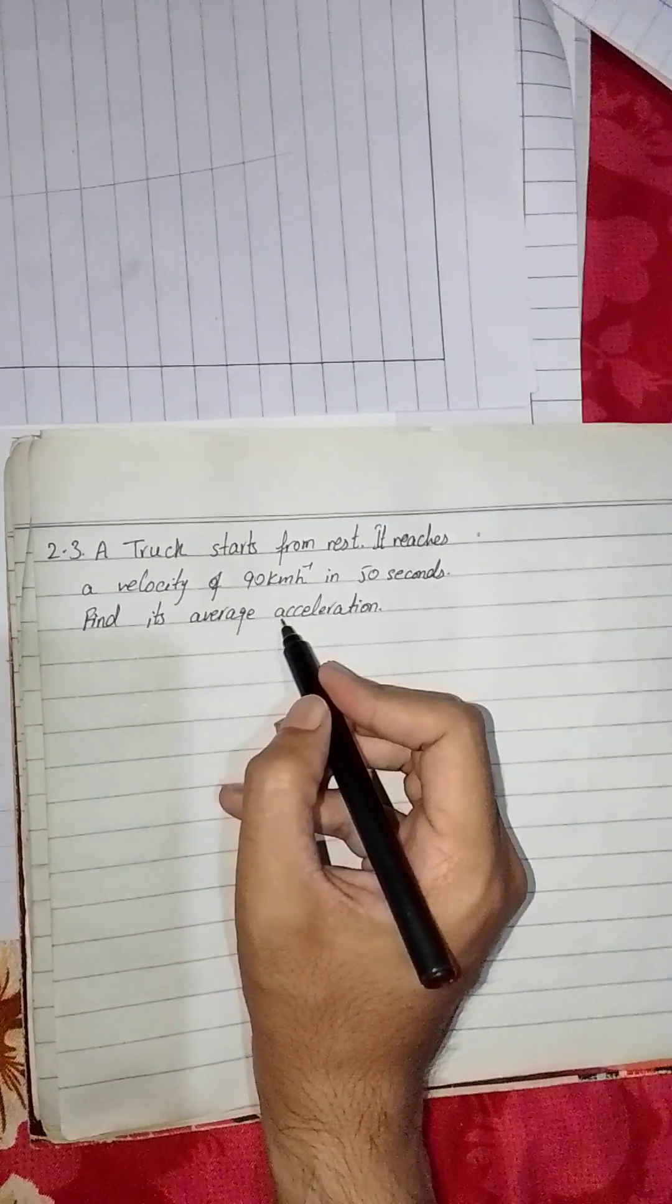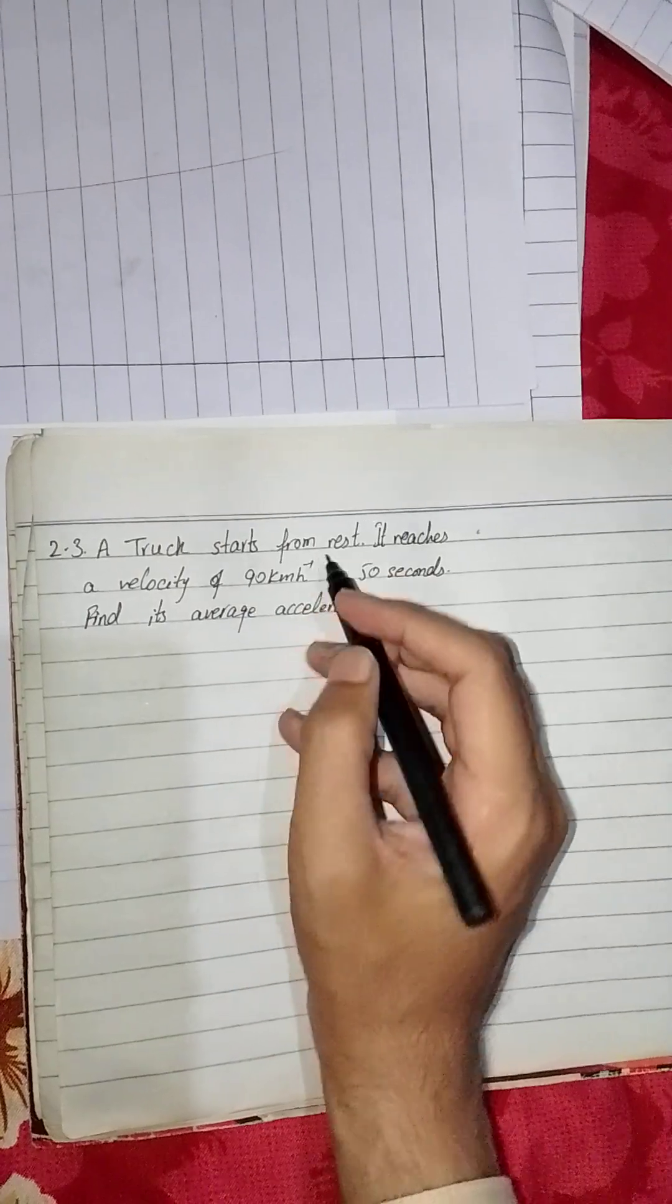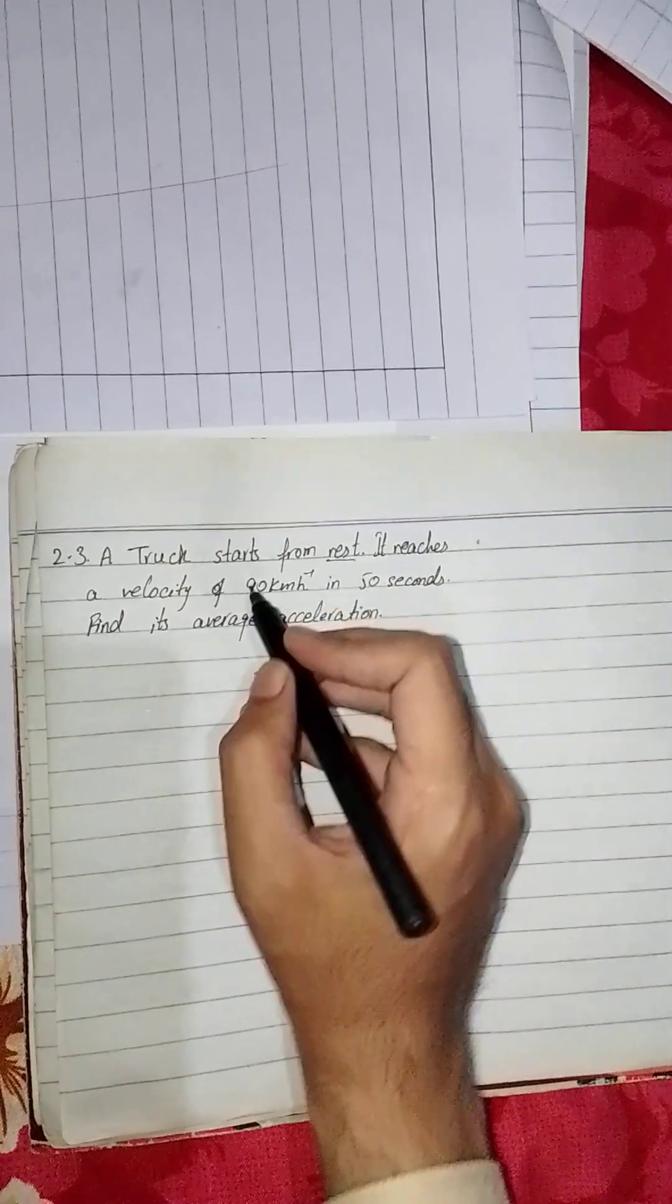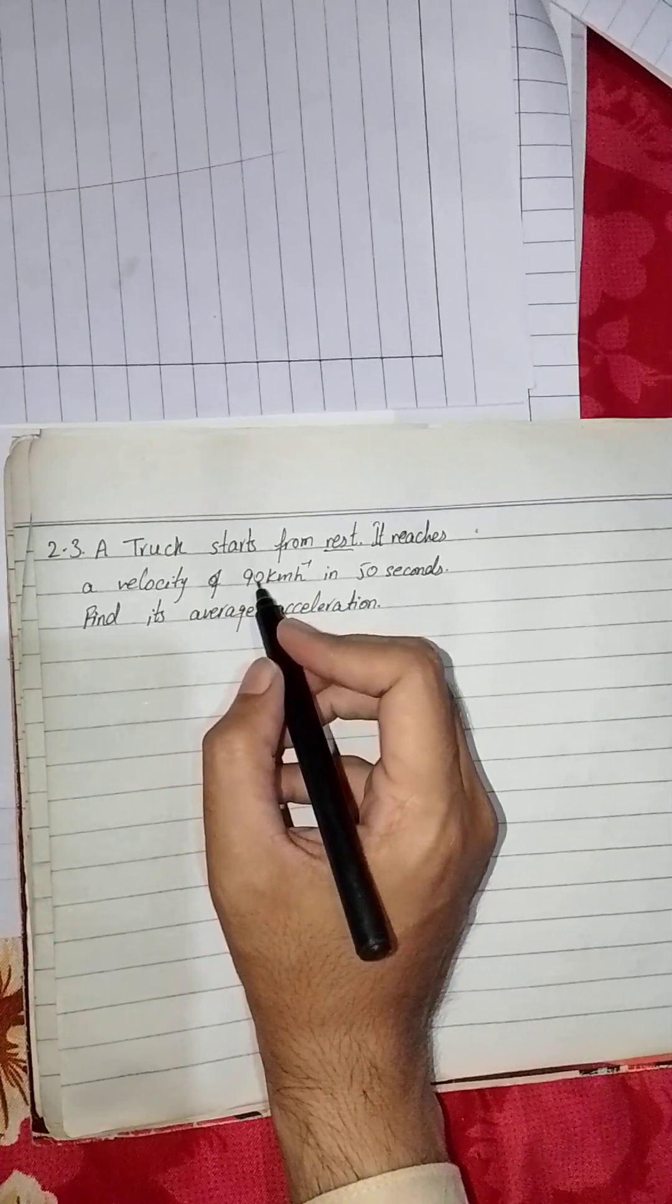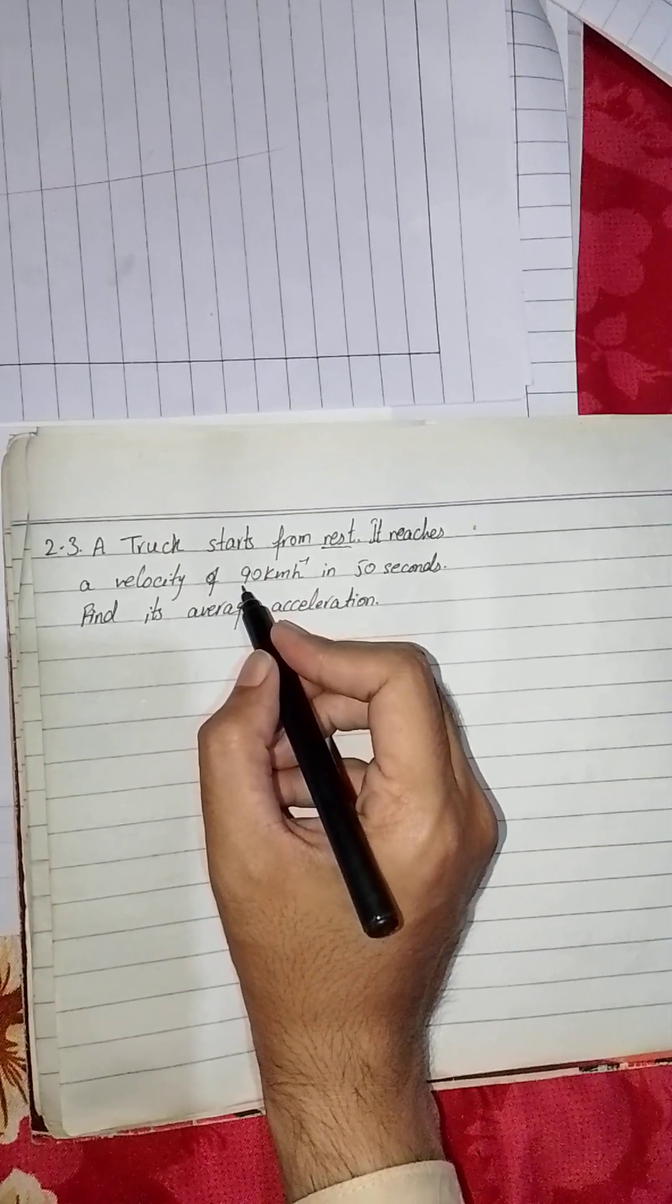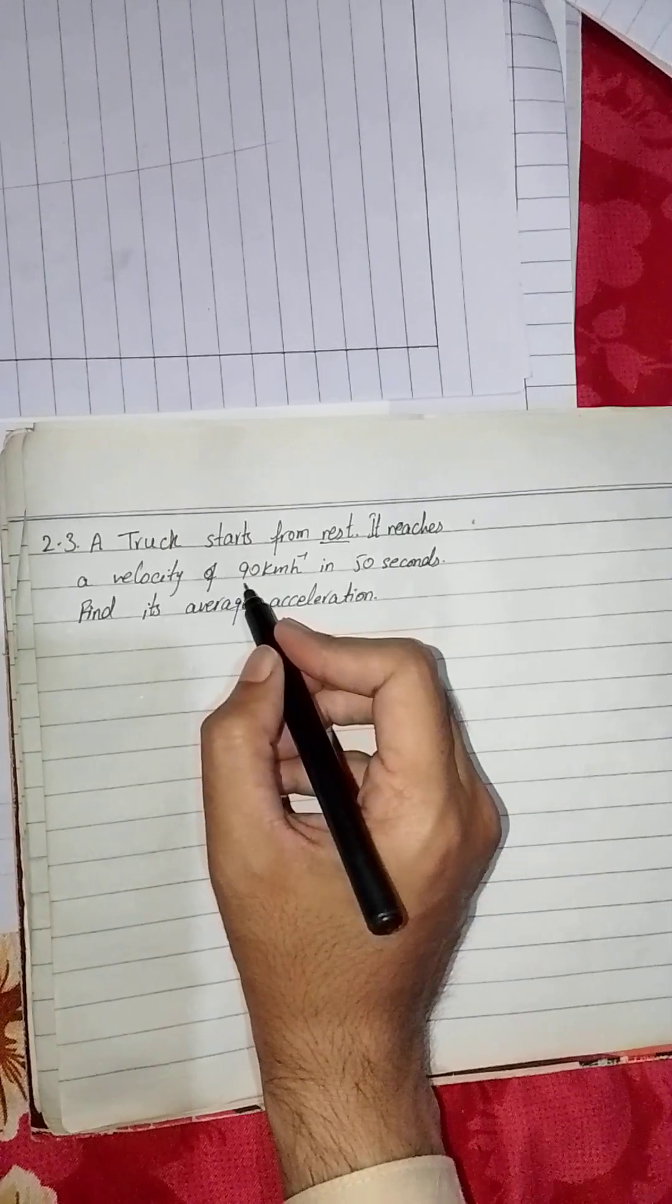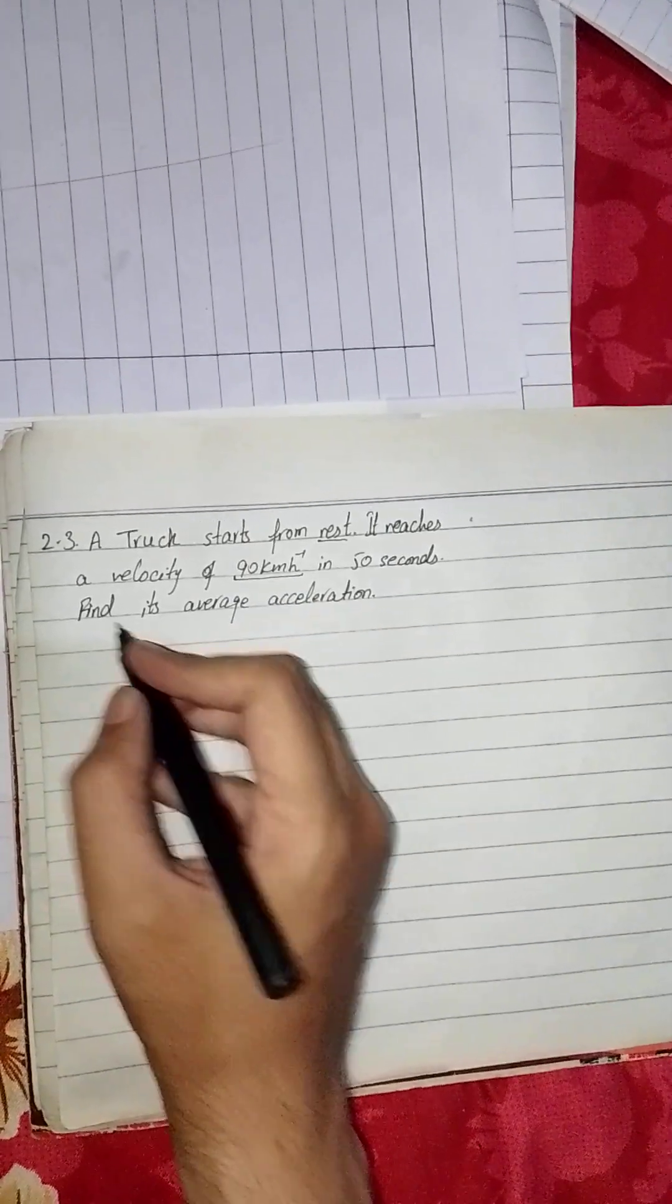We have to find the average velocity of a truck which starts from rest, meaning its initial velocity is zero, and it reaches a velocity of 90 km per hour in 50 seconds. So 90 is its final velocity.